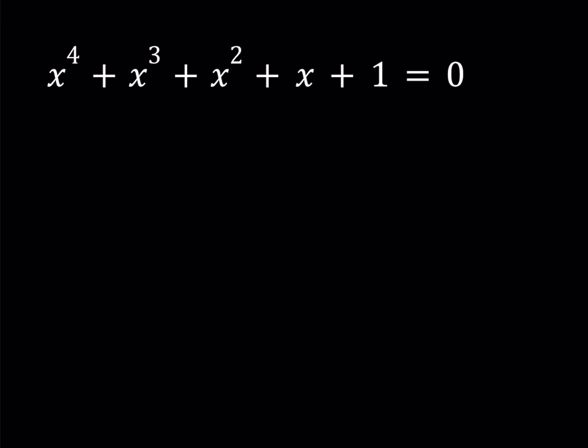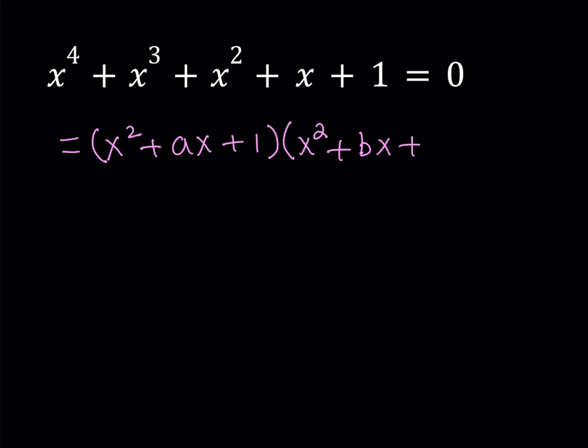I'm going to factor this equation. I don't know what the factors are, but I'm going to find them. I will write this equation as a product of two quadratic polynomials. They're going to look like this: x squared plus ax plus one is one of them, and the other one is x squared plus bx plus one. Now, a and b can be the same or different.